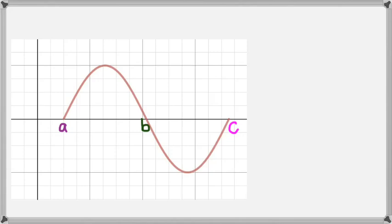Let's put that as a, b, and c. Now we know that the area above the x-axis would come out as positive, and the area below the x-axis would come as a negative area.